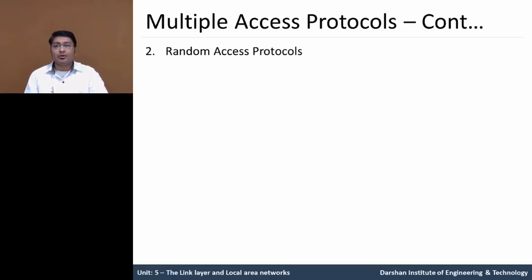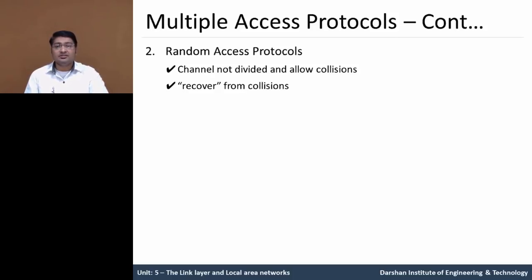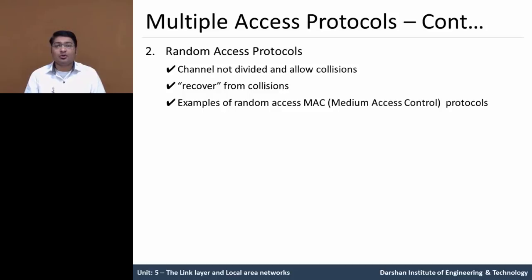The second type is random access protocol. The channel is not divided and it allows collisions. It is useful to recover a frame from collision. Examples of this protocol are Aloha and Slotted Aloha, which we will discuss later. Other protocols include CSMA, CSMA/CD, and CSMA/CA. These are useful to recover data frames from collisions.